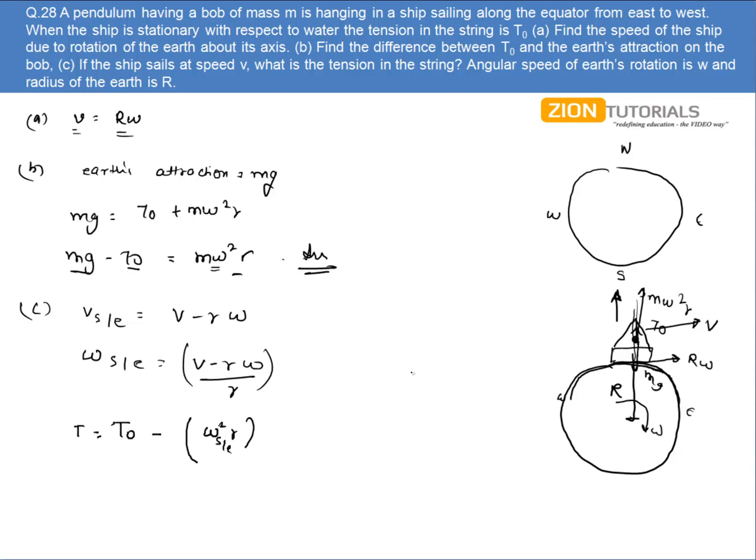Because now what is happening is that the speed of the ship is increased. Earlier it was rotating with the speed of the rotation of the earth. Now its speed is increased, so its centripetal force is increased, so its tension will decrease.